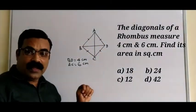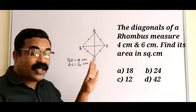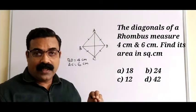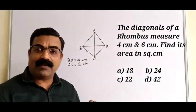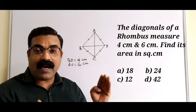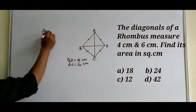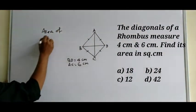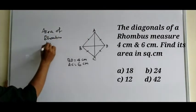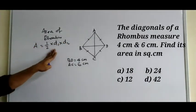You need to find the area. You don't need to write all of this in your exam — understand what a rhombus is and its properties, then apply the direct formula. The area of a rhombus is given by the formula: Area = ½ × d1 × d2.